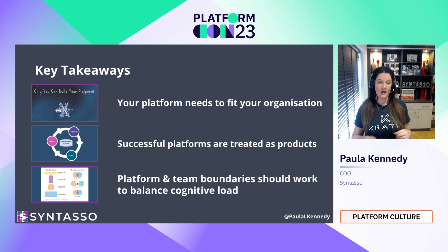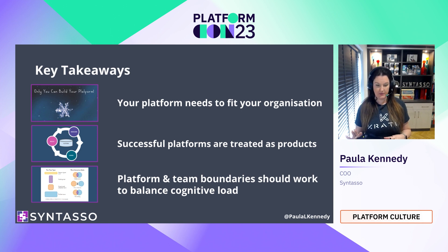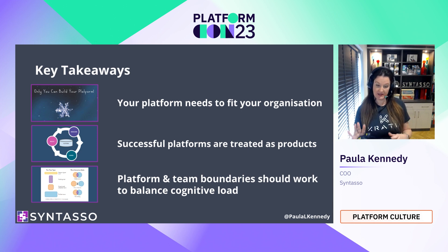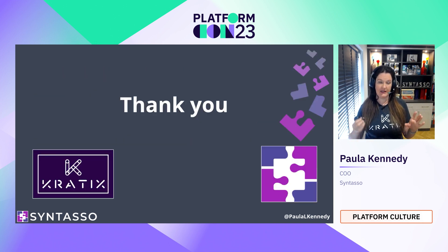To summarize: I've described what a platform could look like and how it needs to fit your organization. I've covered some patterns for how to treat your platform as a product — having a vision, collaborating with your customers, and understanding their needs. And finally, I've talked briefly about boundaries of platform and teams within your organization, so you can keep an eye on cognitive load, make sure no one team is overloaded, keep a focus on having clear APIs between teams to drive frictionless interaction, and make sure everybody is pulling in the same direction. I'll be around on Slack if you have any questions — feel free to ping me on Slack, Twitter, or LinkedIn. Thank you very much for listening.